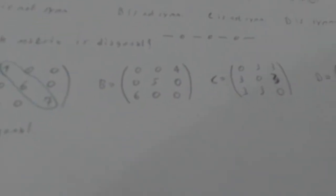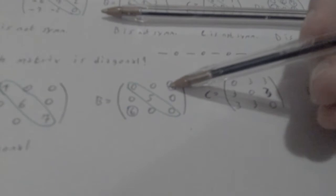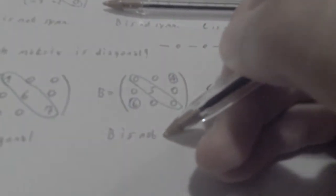Let's see B. B, this is the main diagonal. However, we do have 4 and 6 over here. So B is definitely not diagonal because we have 6 and 4, which are not 0, so they're not null. So B is not diagonal.